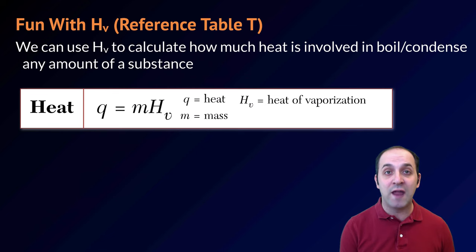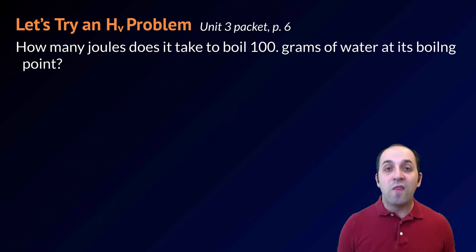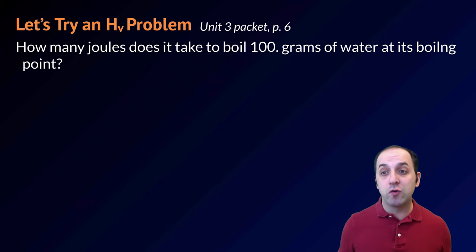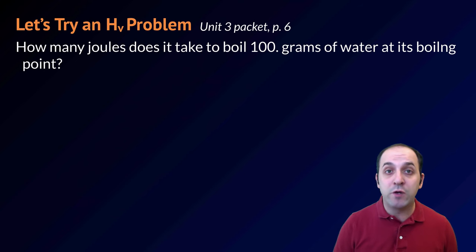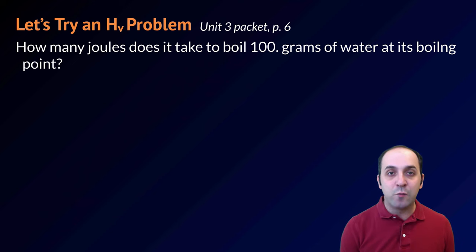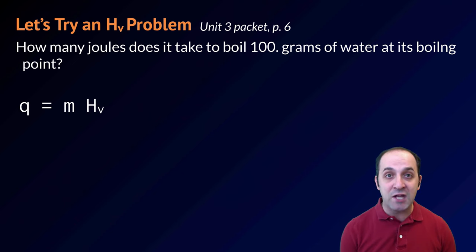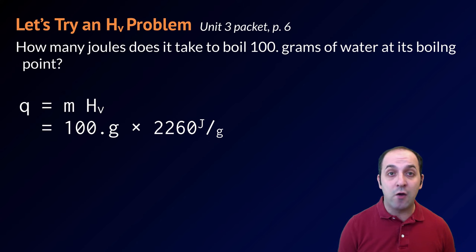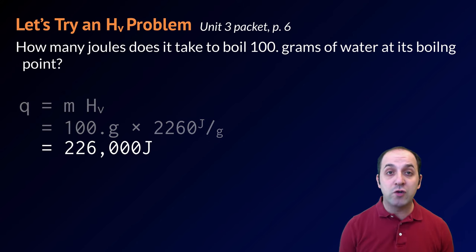Let's try a problem with HV. From page 6 of your unit 3 packet: how many joules does it take to boil 100 grams of water at its boiling point? Pause the video and try to solve it. Because we're boiling the substance, we use Q = mHV. Plugging in our values and multiplying them out gives us an answer of 226,000 joules.